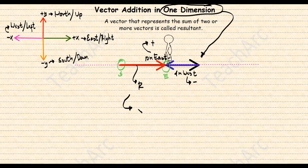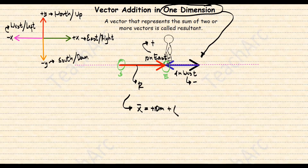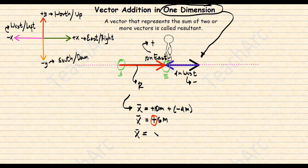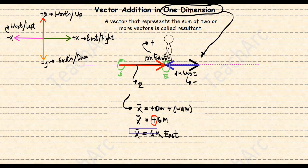Now to get the resultant, which in this example is displacement, we will just add these vectors including their signs. So that is positive 10 meters plus negative 4 meters, which is equal to positive 6 meters. The positive sign indicates the direction of the vector — in this case, positive means east and negative means west. Therefore, our final answer is 6 meters to the east.